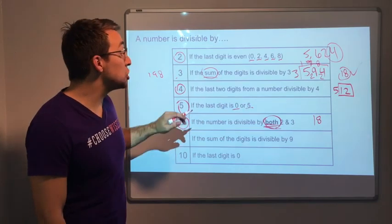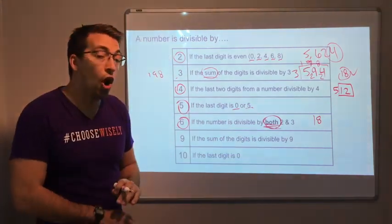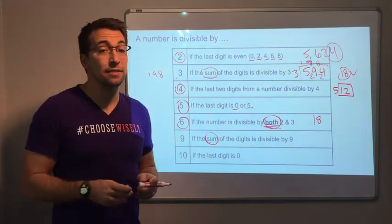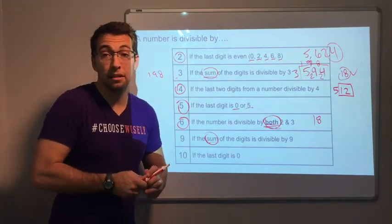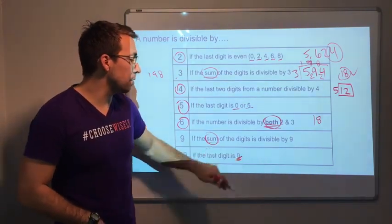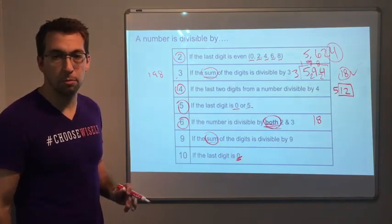9. If the sum of the digits, all of the digits added together, if that's divisible by 9, then you can divide it by 9. And then lastly, 10. Well, if the last digit is a 0, then it's divisible by 10.